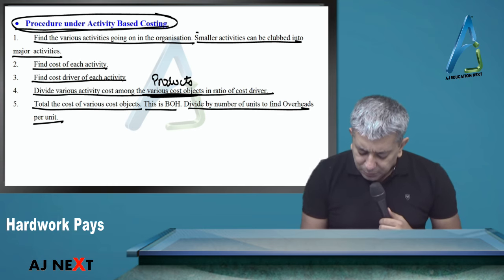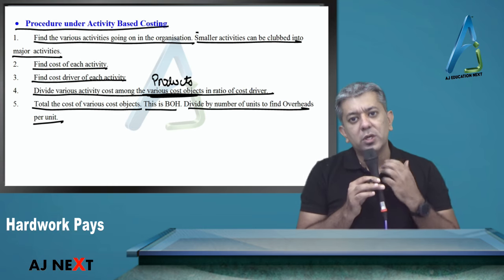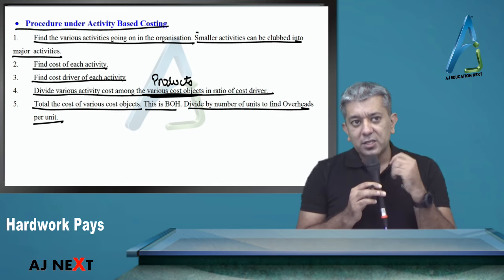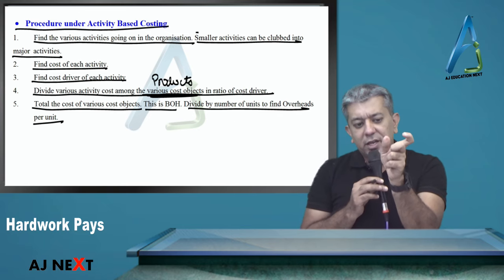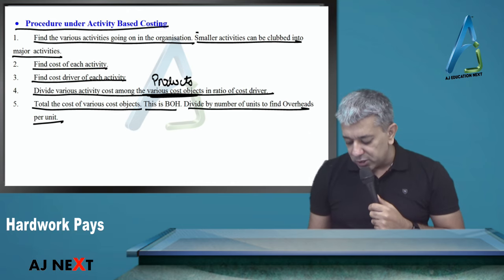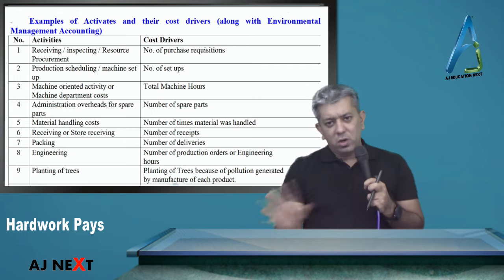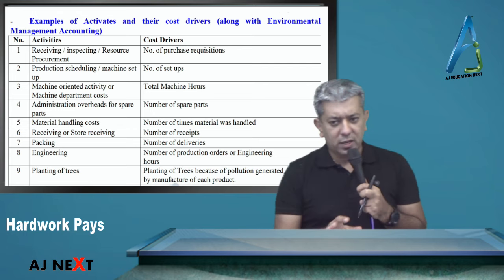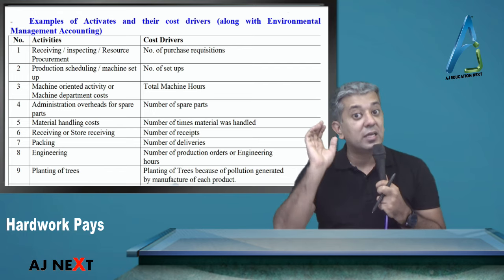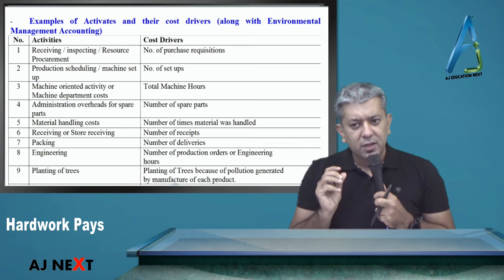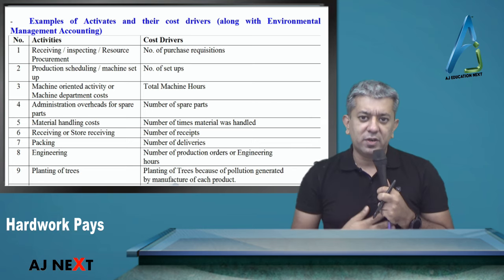Activity-based costing is very simple. Your work will always be done quickly. The only thing is, for whatever activity there is, you should know its cost driver. So I've started making a list. This list covers up all your examples that we did in class, plus what's in your theory.